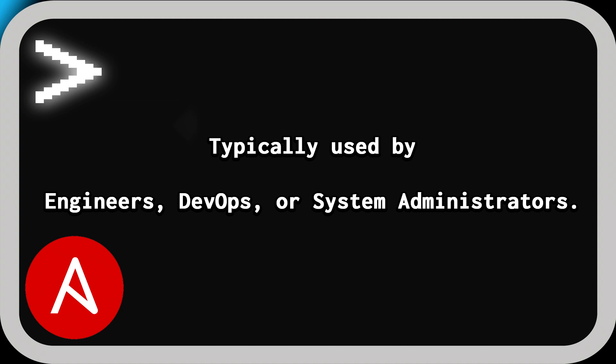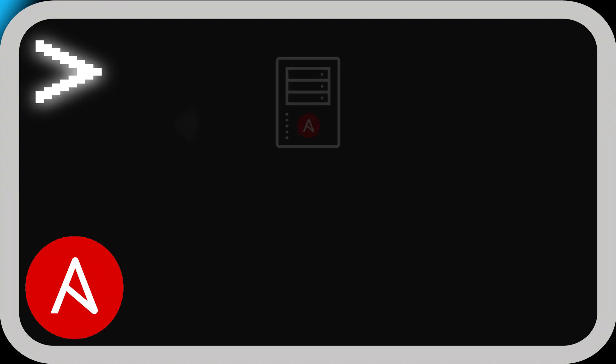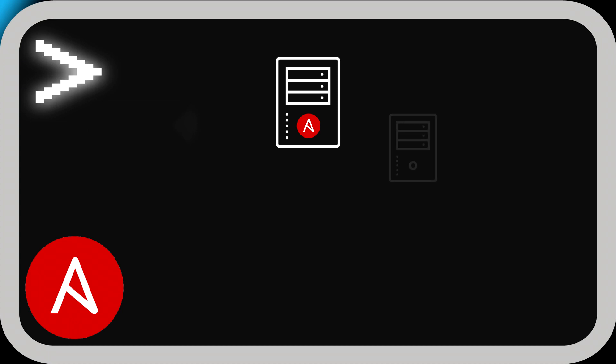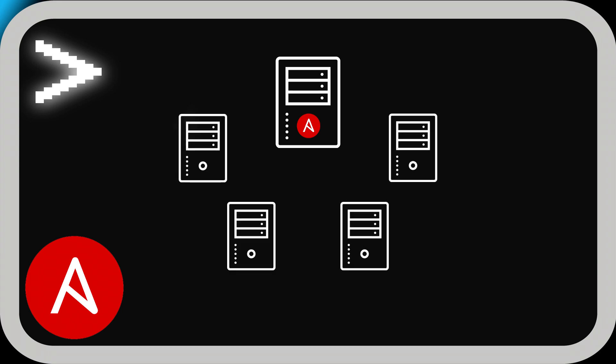Let's take a closer look at how Ansible is typically managed and deployed. Here in the center of your screen we have what is called a control node — this is any server that has Ansible installed. For today's demo it will be a Linux machine. The other servers around the screen are what we call the managed nodes, and these nodes will be listed in our inventory file.